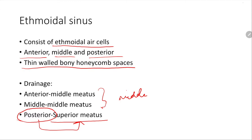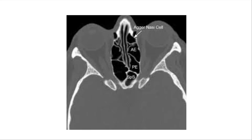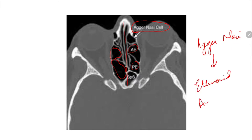Looking at the relations of the ethmoidal sinuses on a transverse CT section through the cribriform plate: the honeycomb spaces are all irregular. They are paired, present on both sides along the midline — anterior, middle, and posterior ethmoidal cells. One of the largest cells is called the agger nasae. Medially is the bridge of the nose; laterally is the orbit; superiorly is the cranial fossa. They drain into different meatuses as already discussed.